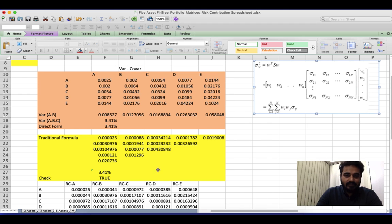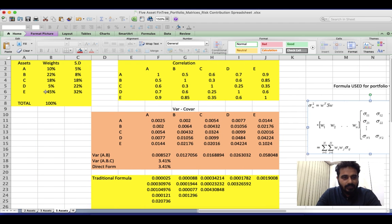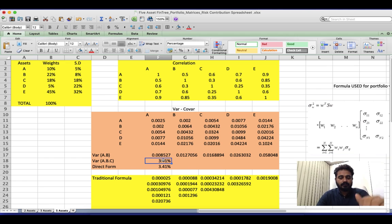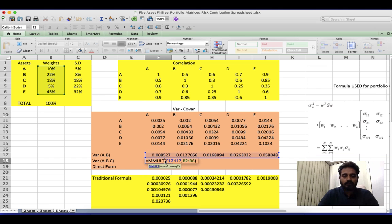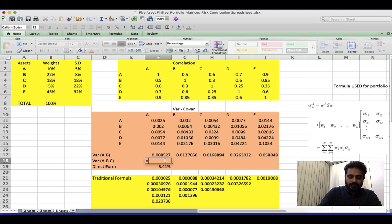Now let's try this on five assets. It's going to be fun. So same story. I have assets, I have their weights, I have standard deviation. Now I have a variance covariance matrix. And then we want to make use of that MMULT formula.